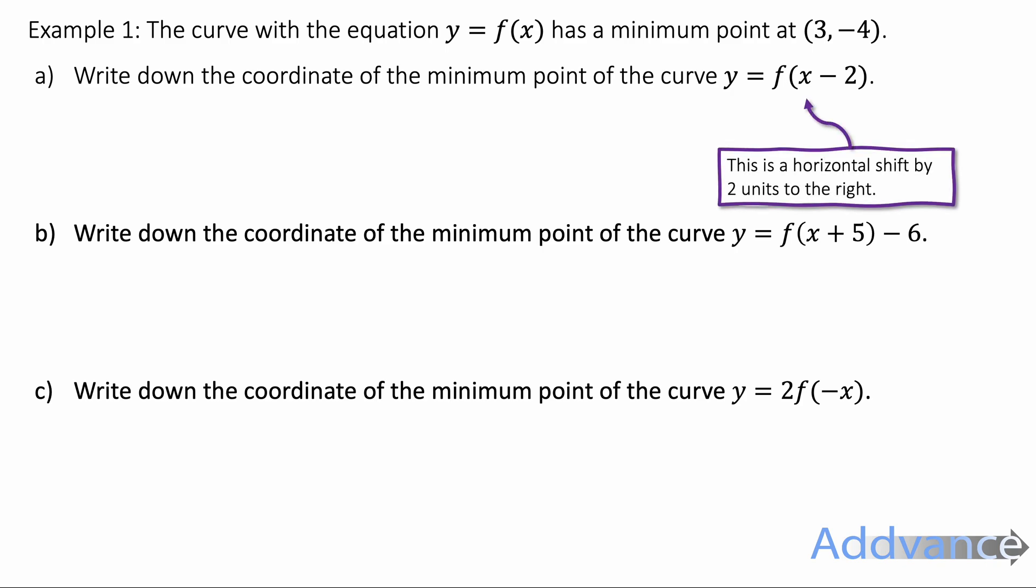Well here we've got f of x minus 2 and so it's a horizontal shift by two units to the right. So the x coordinate goes up by two units, two spaces. So instead of 3 minus 4 it's 5 minus 4.